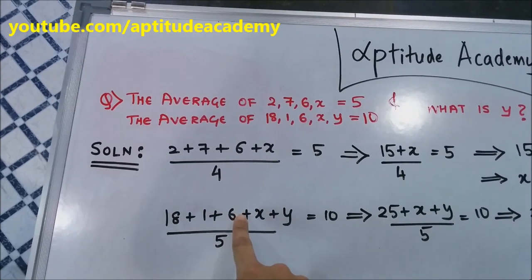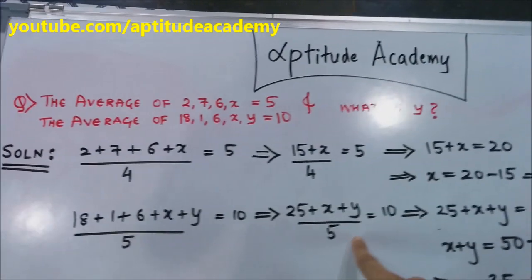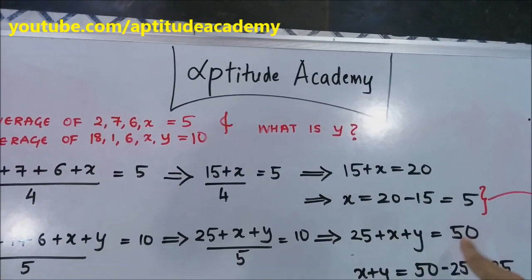Now, 18 plus 1 is 19, 19 plus 6 is 25. 25 plus x plus y by 5 is equal to 10. Now, you take 10 to this side, it will give you 25 plus x plus y is equal to 50.